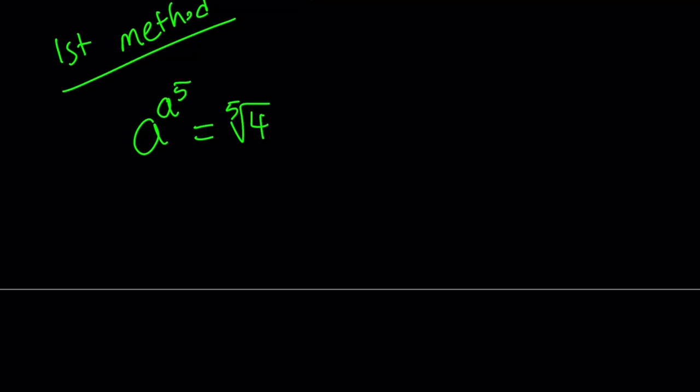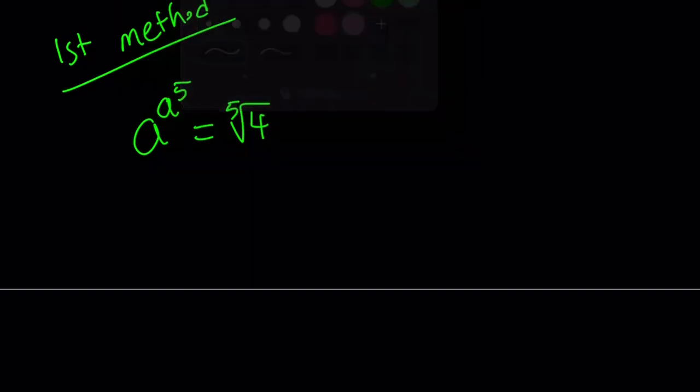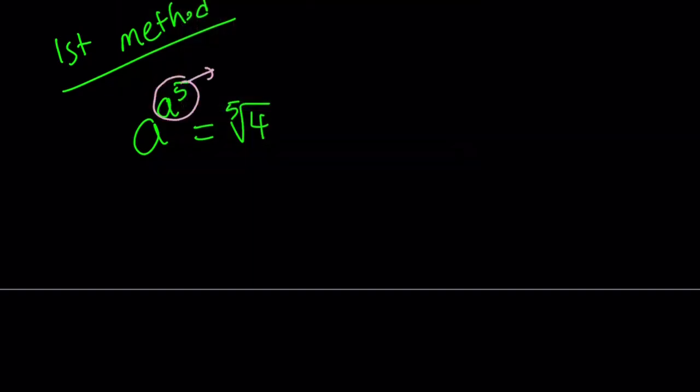I'm going to call a to the power 5 something. How about calling that b? So we say a to the fifth equals b. This implies that a to the power b equals the fifth root of 4. So we kind of turn it into a system where we can substitute.